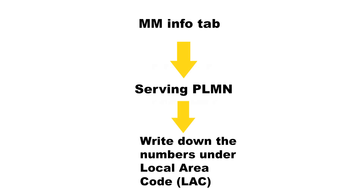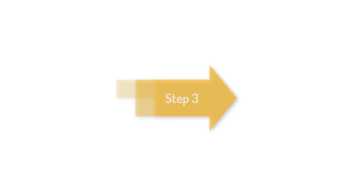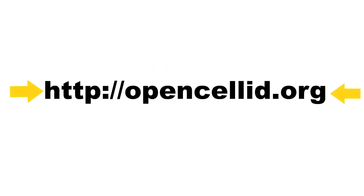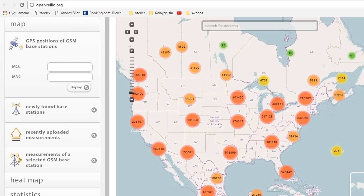Step 2: Go back to the main menu and click on the MM Info tab, then on Serving PLMN. Write down the numbers under Local Area Code (LAC). Step 3: With the help of these two numbers and an ordinary website (the fourth tab to the left), you can determine the location on the map of the basic station that your phone is connected to.